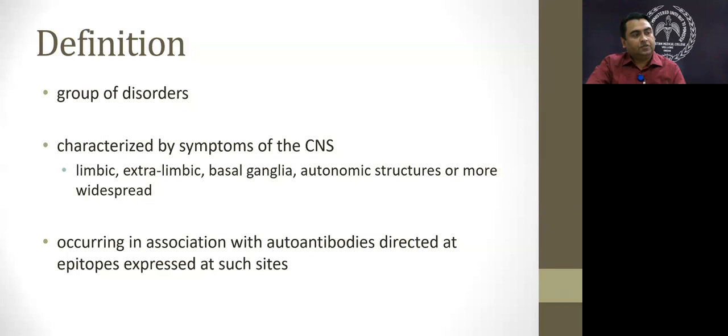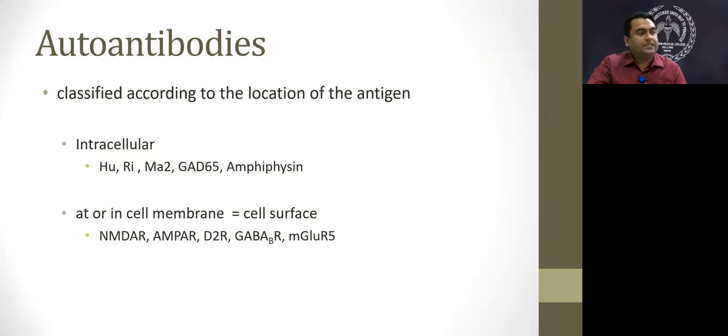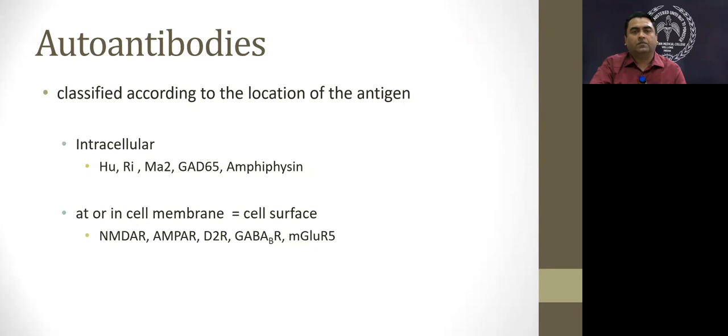So what is the illness we're talking about? There is a disease presenting with autoantibodies classified based on the location of the antigen — either intracellular or on the cell surface. Intracellular ones include anti-Hu, Re, Ma2, and amphiphysin antibodies. On the cell surface or cell membrane are the NMDA receptor, AMPA receptor, and dopamine-2 receptor antibodies, among others. These antibodies are classified based on the location of the antigen.